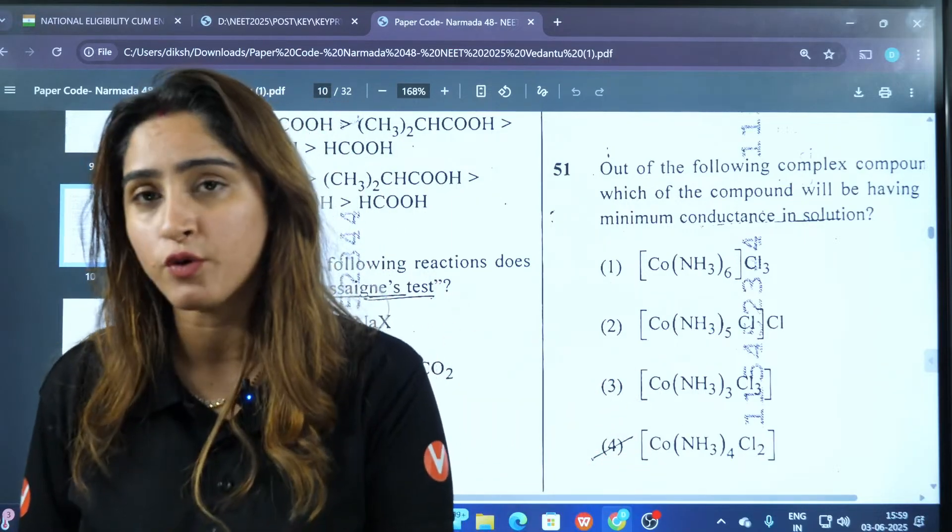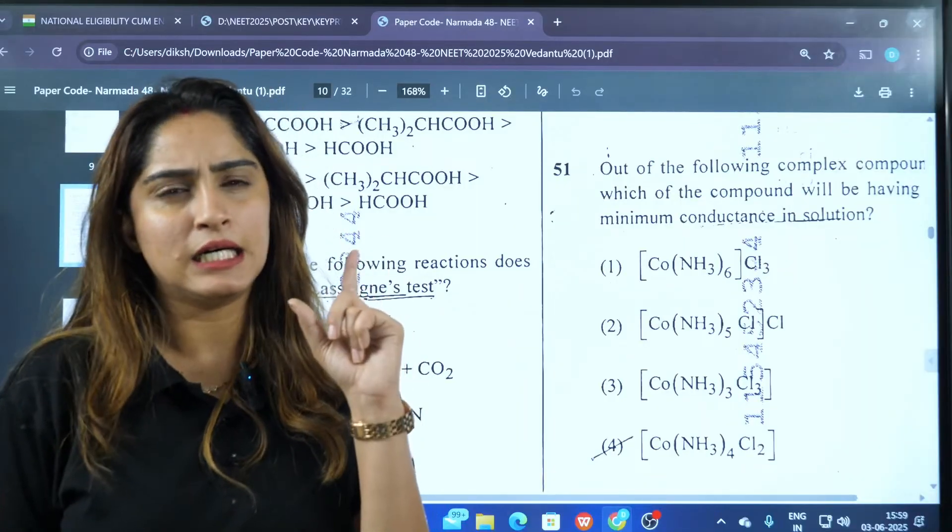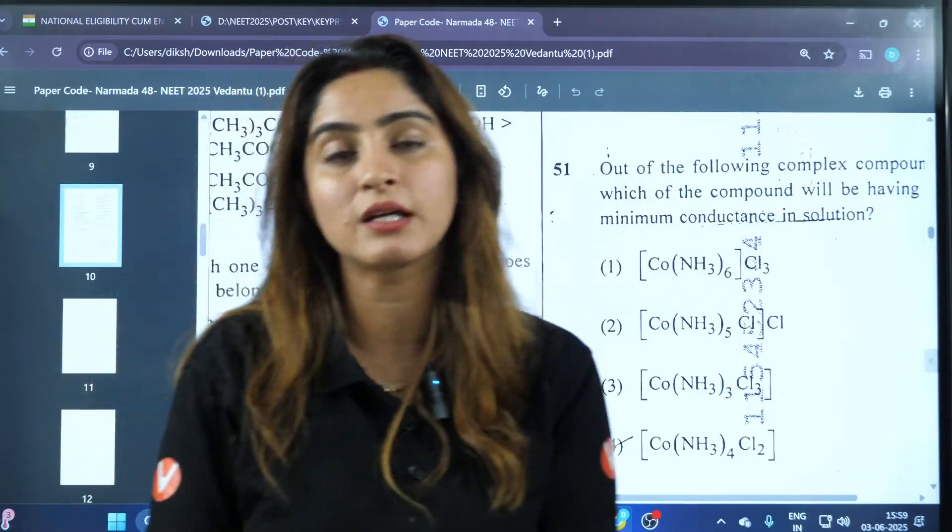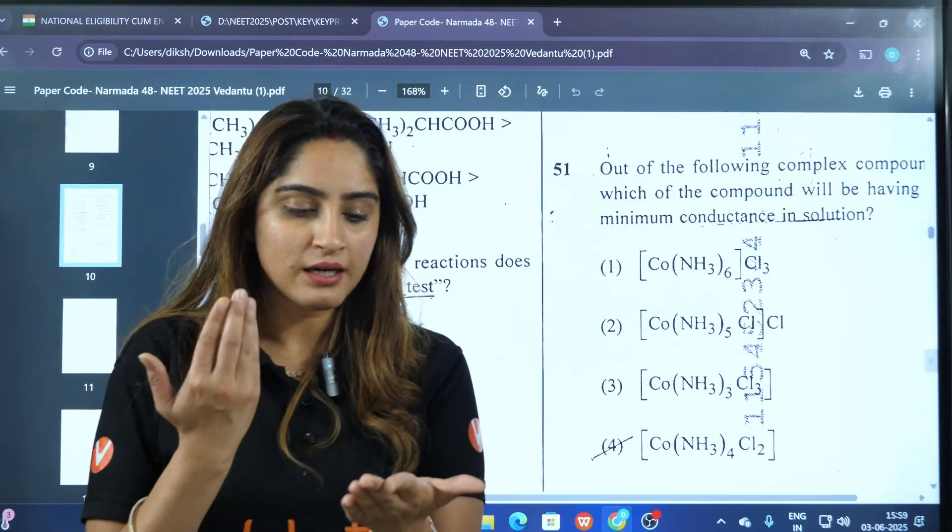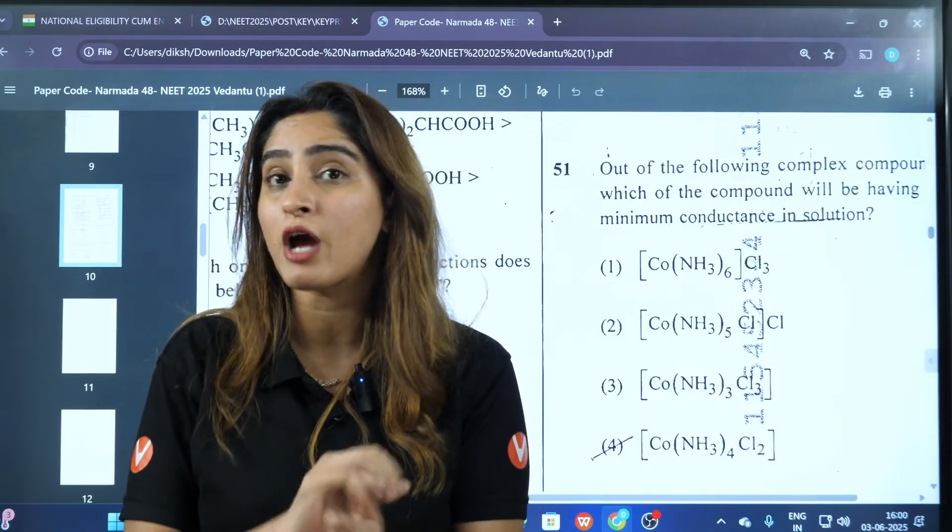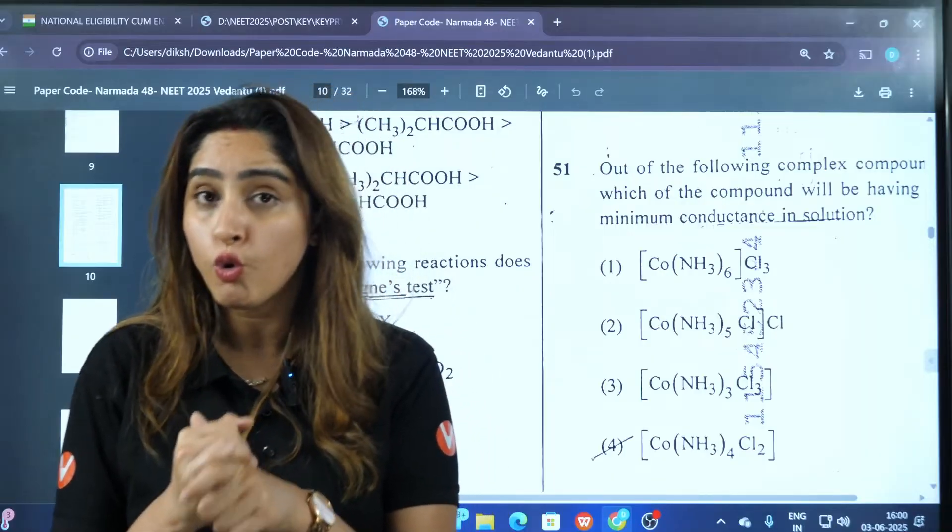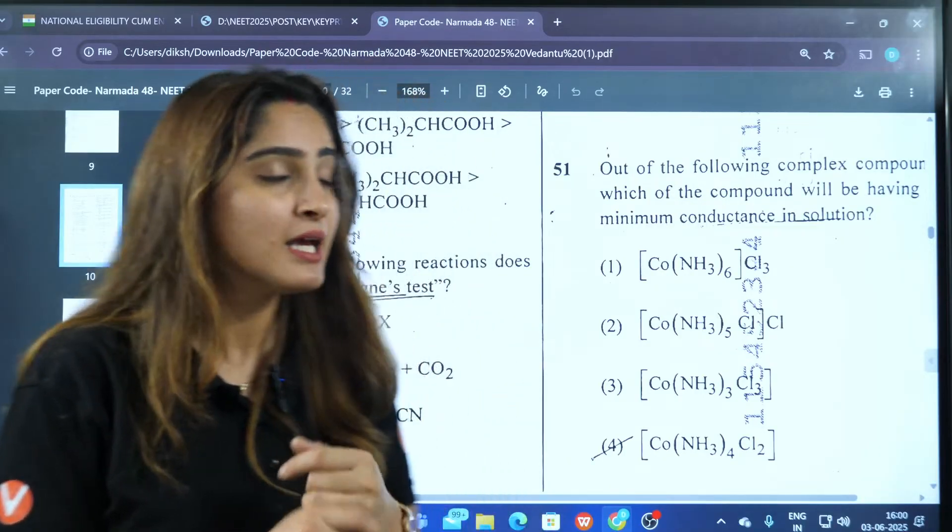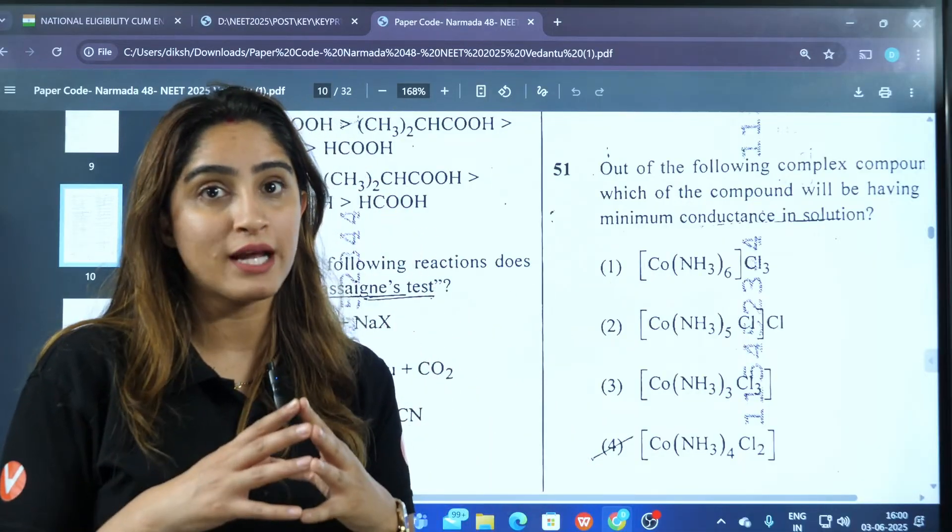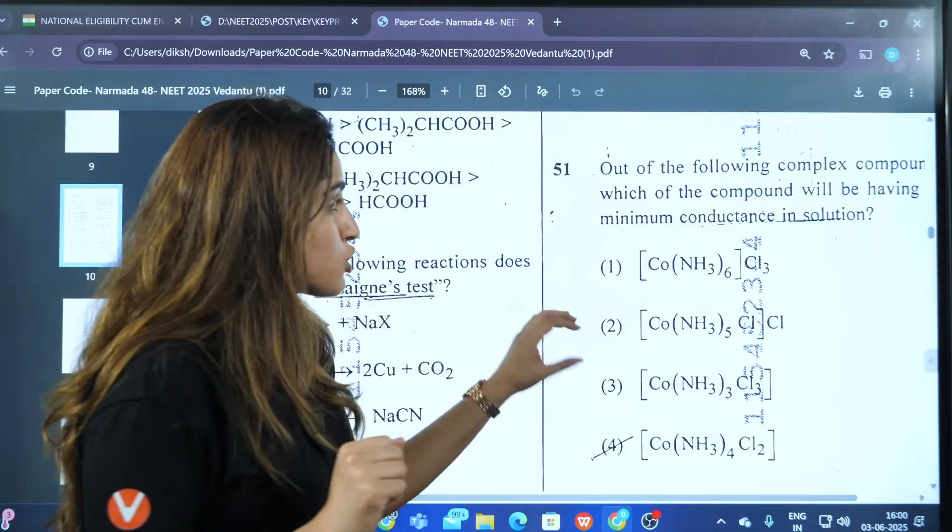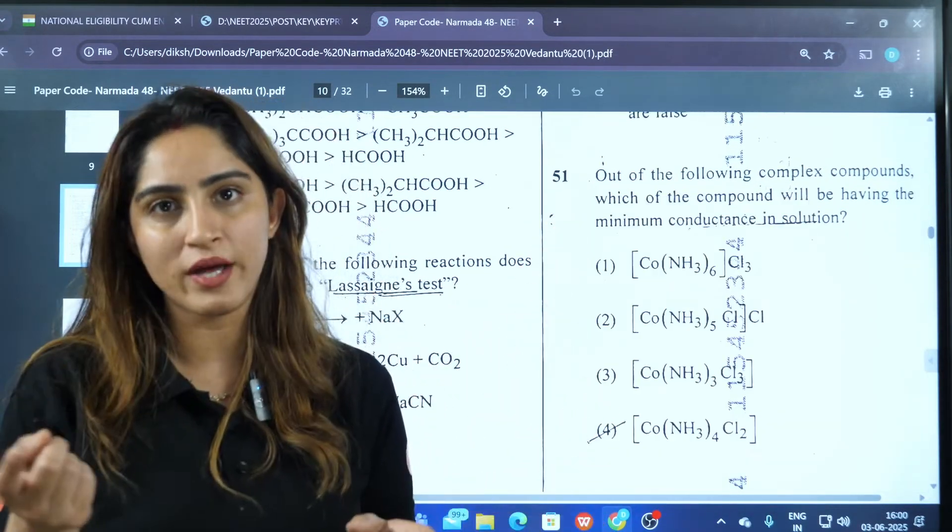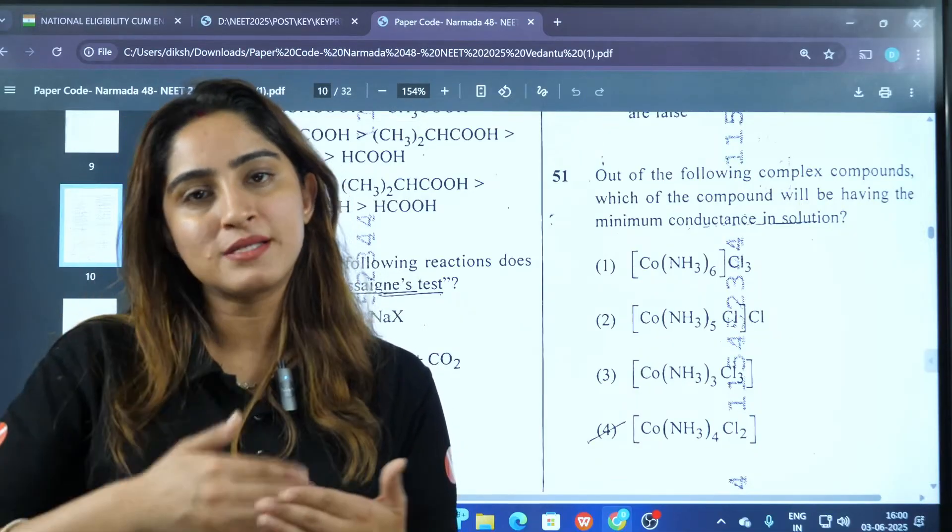There are students who assumed in the class that since it has three and four both options, I am very skeptical about this answer so I'll skip this. Those who were scared of negative marking have skipped this question. Now will they get any marks or no? That is the main question here. According to the rules, if you have any two answers for one question, that means the mistake is...